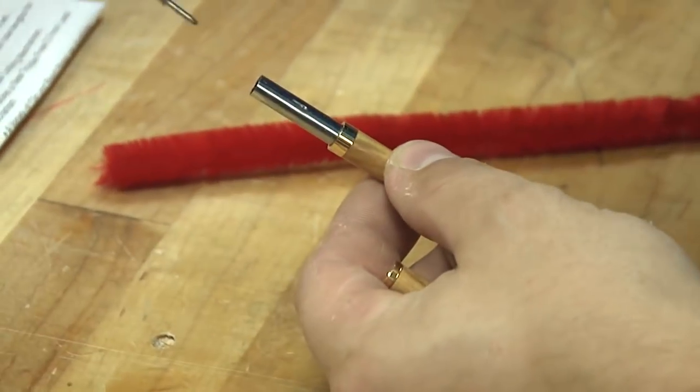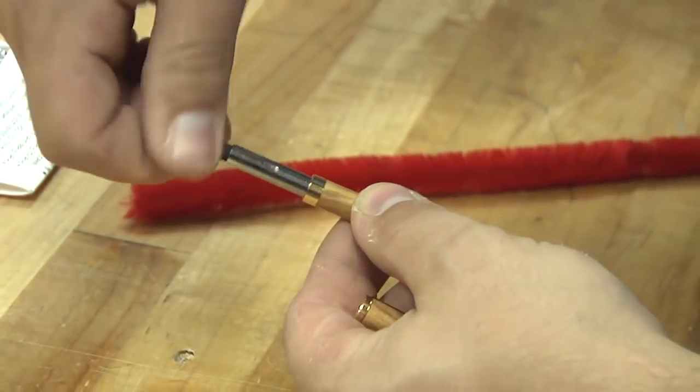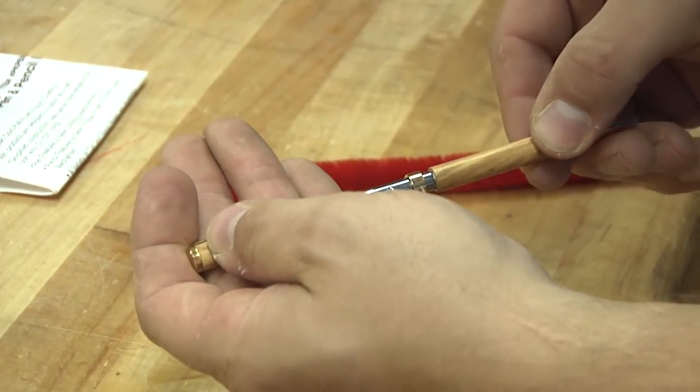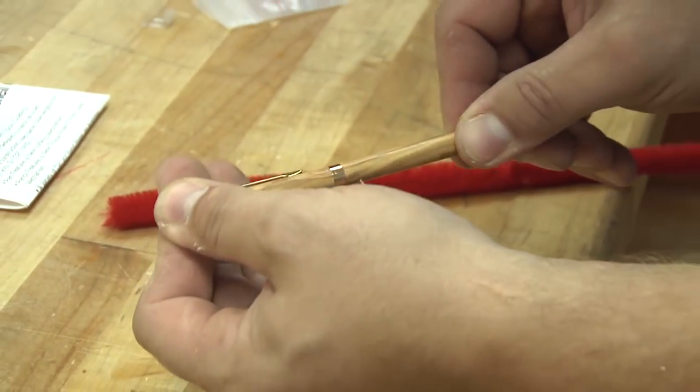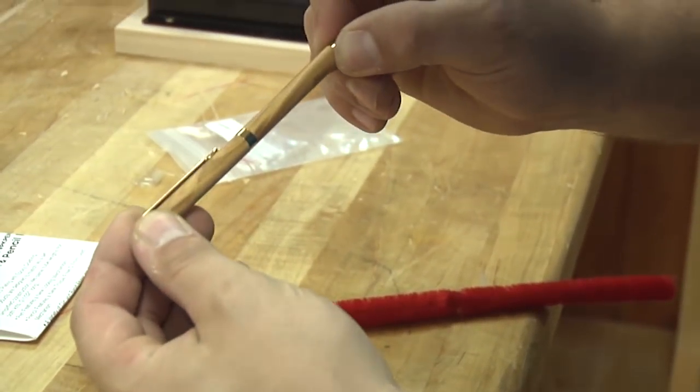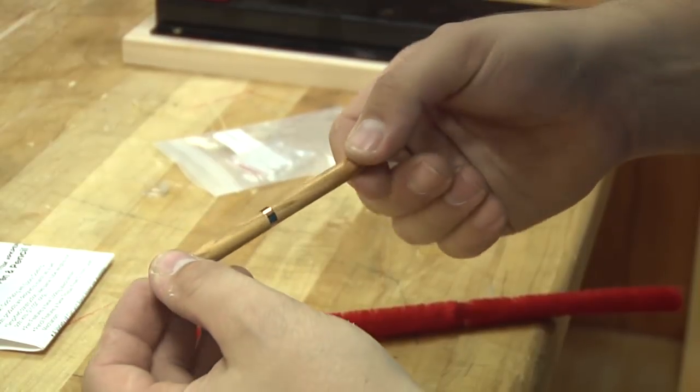Then insert the ink into the mechanism. Two halves pushed together. And if you look carefully, you can line up the grain by twisting it around.